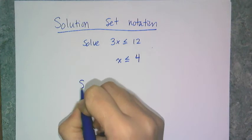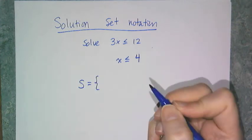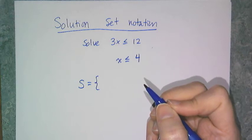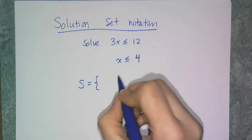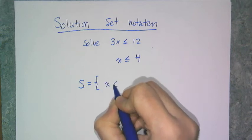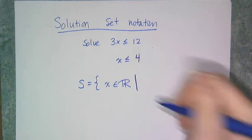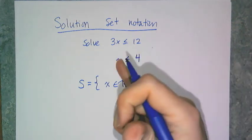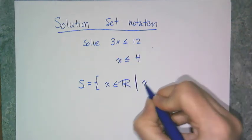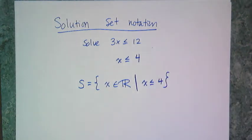We have to write it kind of like we wrote the solution to systems of equations. I have to specify the variable I'm going to use, in this case x, and I'm saying that x is a real number such that x is less than or equal to 4. So that's how I write my answer in solution set notation.